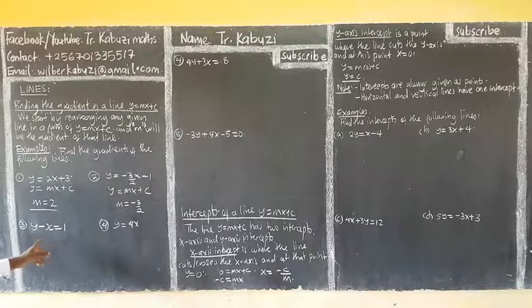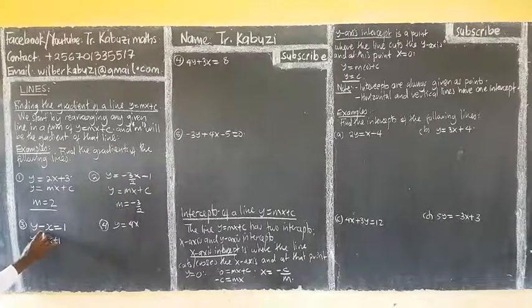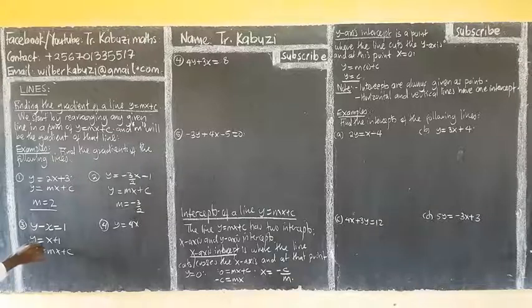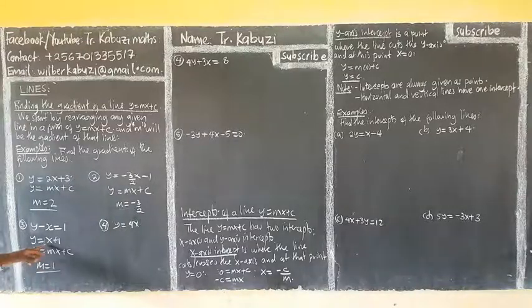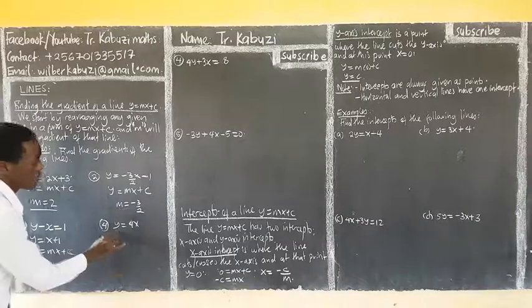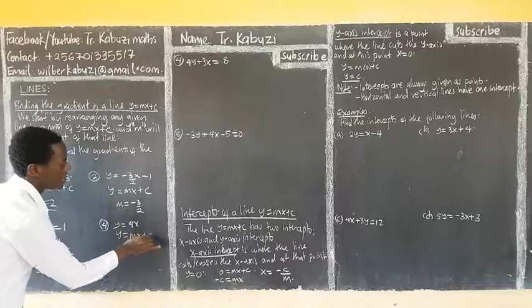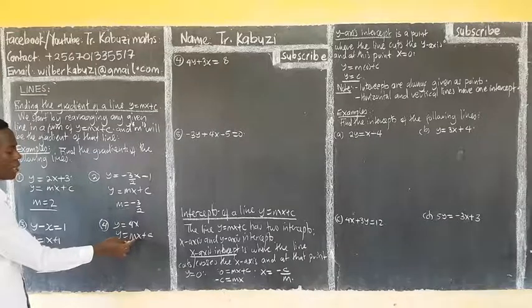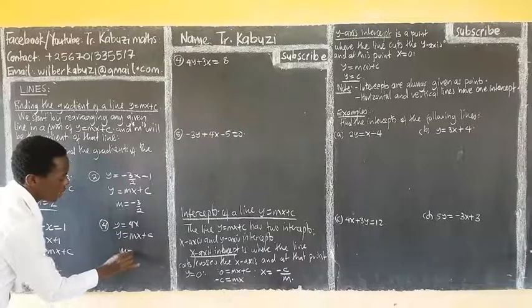Now this one is not in this form, so I first take x to the other side. When x crosses the equal sign, it's going to become positive. We now have y equaling to x plus 1. Now this coefficient is 1, so I compare with y equaling to mx plus c. The coefficient of x here is m, and here the coefficient is 1. So our m is equal to 1. Now this one's coefficient of y is 1, so I just compare with mx plus c, and my m here will be 4.